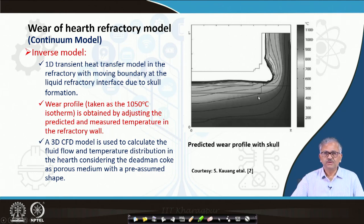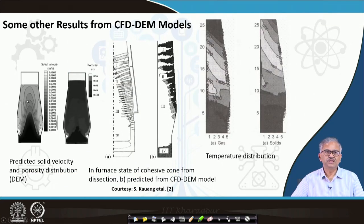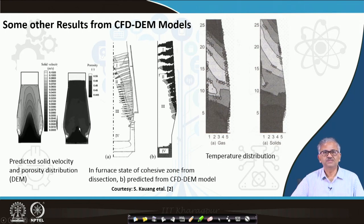Now some results from the CFD-DEM model. From the DEM model, you can calculate the velocity of the particles. The velocity becomes maximum in the center and less at the periphery, and as you move deeper the velocity slowly decreases. The porosity distribution is also there. This is the continuum model, and this is some example from the CFD-DEM model.